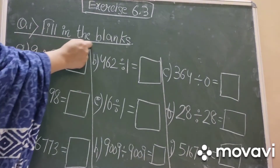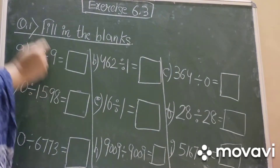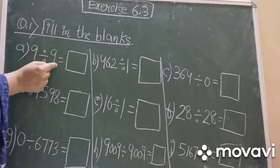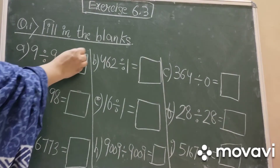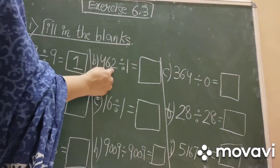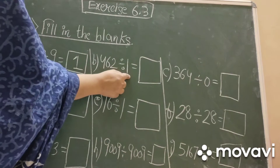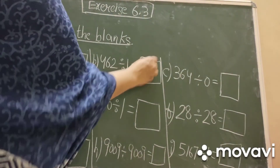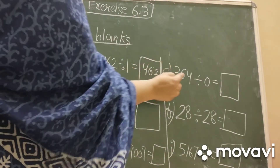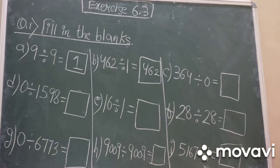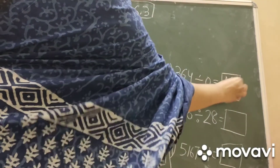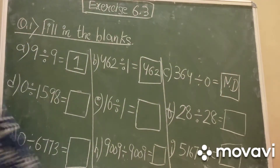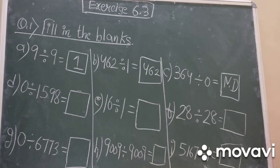Come to question number one: fill in the blanks. Part A: nine divided by nine — whenever a number is divided by the number itself, the answer is one. Part B: 462 divided by one — whenever a number is divided by one, you get the number itself, so 462. Part C: 364 divided by zero — it is not possible to divide a number by zero, so the answer is not defined. You can write 'not defined' or 'not possible' in your notebook.